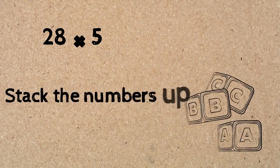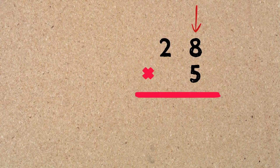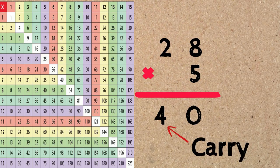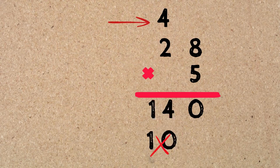We're going to have a look at another problem: 28 times 5. We stack the numbers up as we always do. For the first step, the bottom digit multiplied by the ones digit of the number on top is 5 times 8. If I don't know my answer I can always use a multiplication table — 5 times 8 equals 40. When we get a two-digit answer we carry the first digit on the left, which is 4, to the top of the next column. For the second step, 5 times 2 equals 10, and then we add the carried 4: 10 plus 4 equals 14. So our answer is 140.